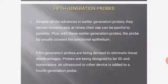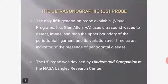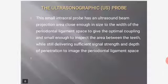Fifth generation probes are designed to be 3D and non-invasive; an ultrasound or other device is added to a fourth generation probe. They aim to identify the attachment level without penetrating it. The ultrasonographic probe, the only fifth generation probe available, uses ultrasound waves to detect, image, and map the upper boundary of the periodontal ligament and its variation over time as an indicator of periodontal disease. It was revised by Hinders and companions at the NASA Research Center. This small intraoral probe has an ultrasound beam projection area close to the width of the periodontal ligament space, small enough to inspect between teeth while delivering sufficient signal strength and depth of penetration.